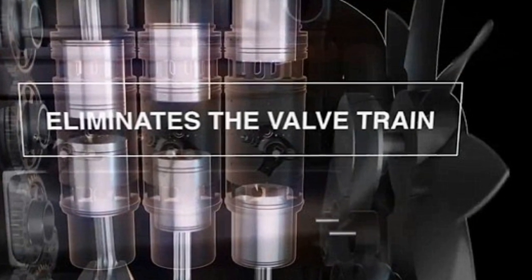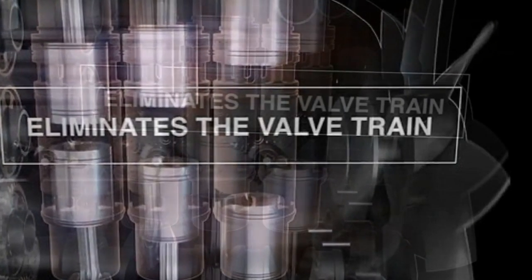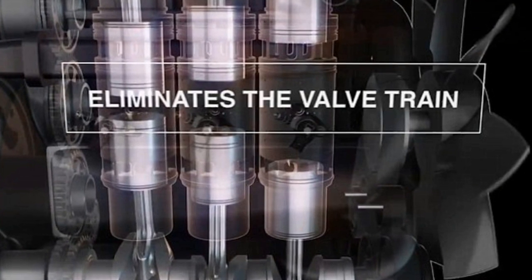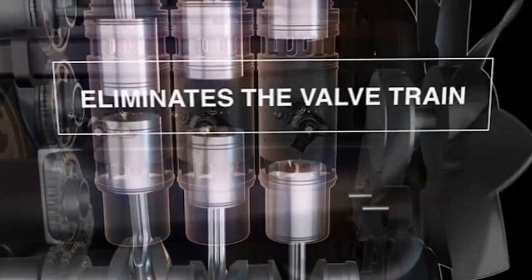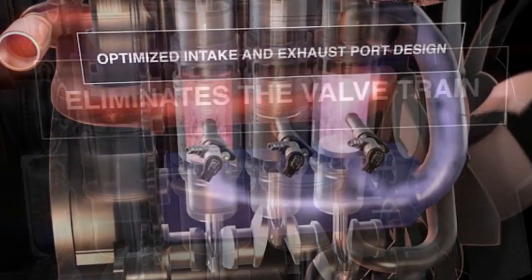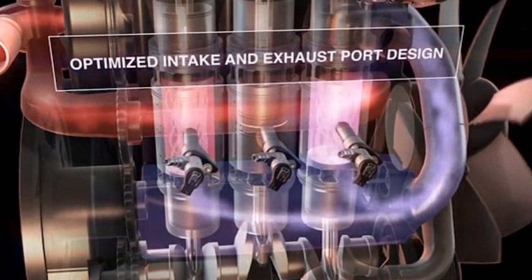What's interesting is that this engine doesn't have any valves or valve trains. Achates's vice president of technology development Fabian Rudin explains in an interview with Wired, 'Everything is basically contained within the cylinder, without the labyrinth of valves and camshafts of a conventional engine.' The opposed-piston engine is a much simpler and smoother design.